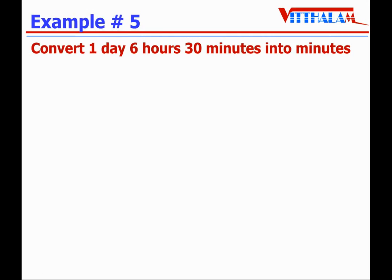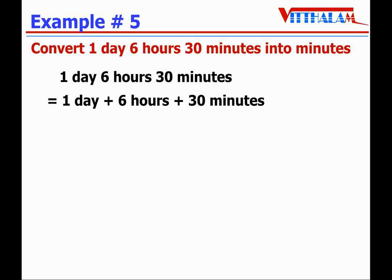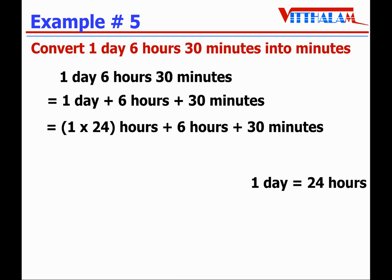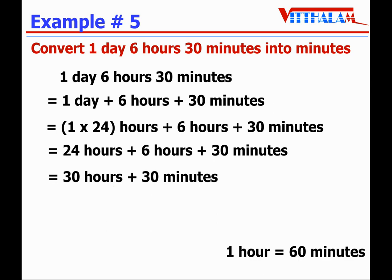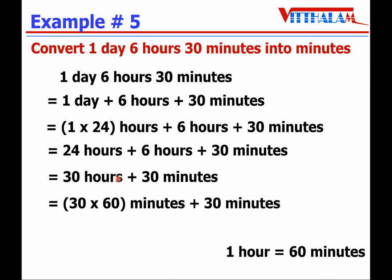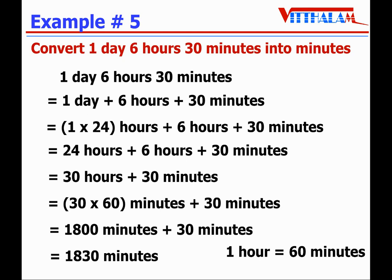Let's take one more: convert 1 day 6 hours 30 minutes into minutes. First, let's convert the day into hours. 1 day equals 24 hours, so we have 24 hours plus 6 hours plus 30 minutes. 24 plus 6 equals 30 hours, plus 30 minutes. Now convert 30 hours into minutes: 30 multiplied by 60 equals 1800 minutes, plus 30 minutes equals 1830 minutes.